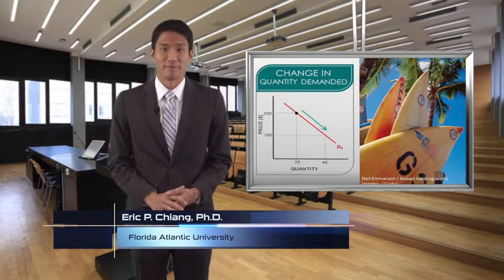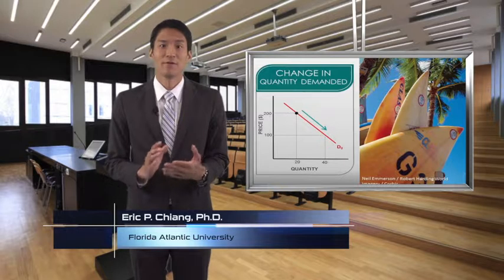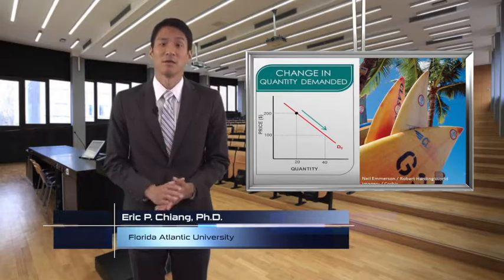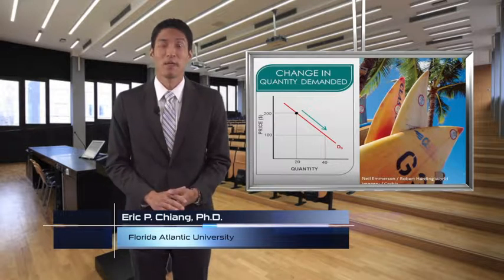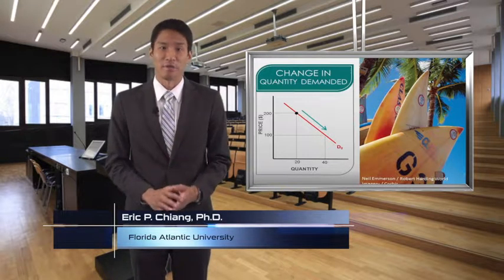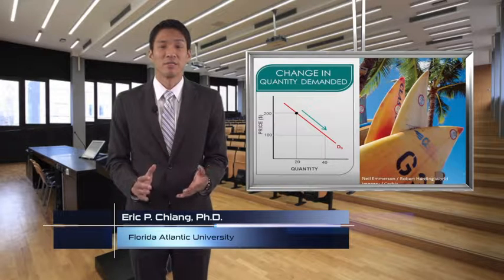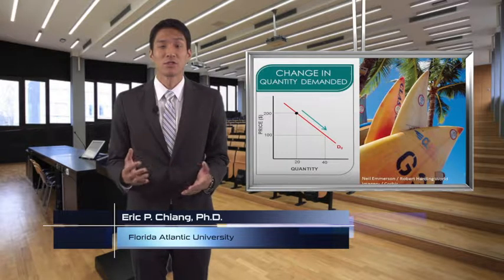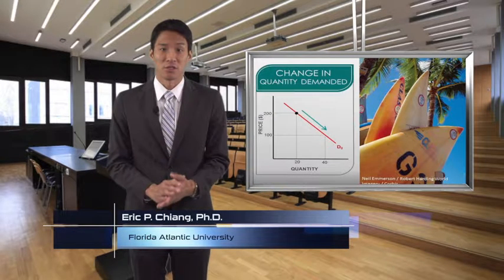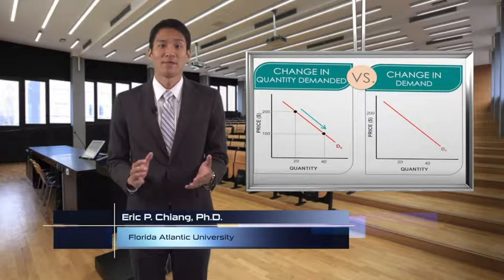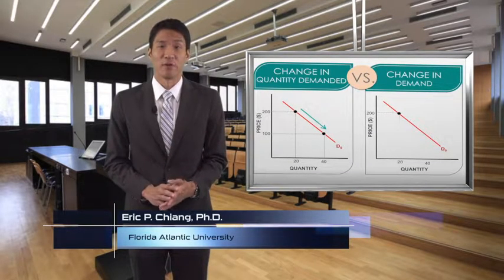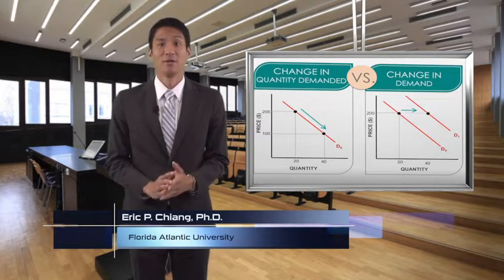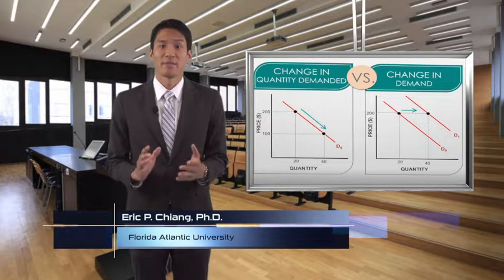Let's start with the demand curve. A change in the quantity demanded refers to a movement along an existing demand curve caused by a change in the price of that good or service. Consider the demand for surfboards. As the price of surfboards decreases, more consumers are willing and able to buy one, which results in an increase in the quantity of surfboards demanded. But if something other than the price of surfboards changes, there might be a change in demand, which causes the entire demand curve to shift.